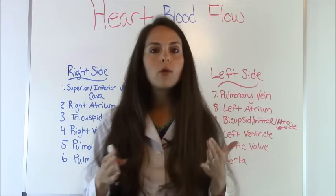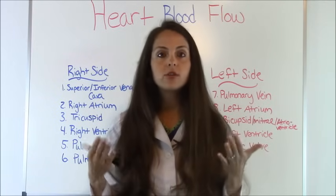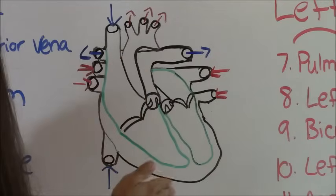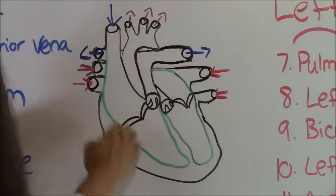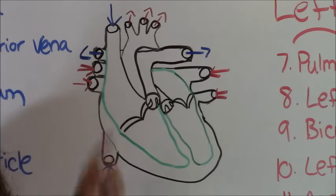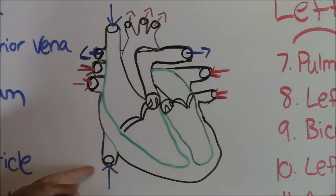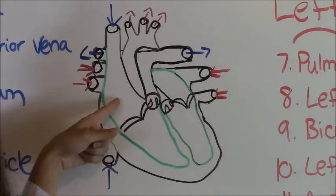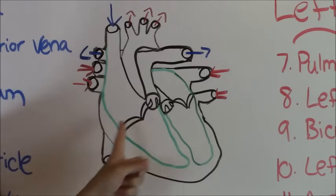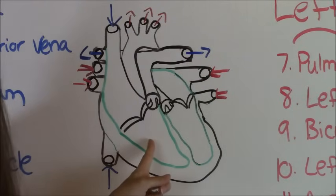First, I want to go over the anatomy of the heart, because you have to understand how the heart is laid out in order to understand the blood flow. We've split the heart into two sides: the right side and the left side. Here we have the superior vena cava and the inferior vena cava, which drain blood into your right atrium. You have your tricuspid valve right here, which lets blood into the ventricle.